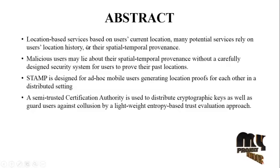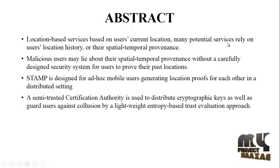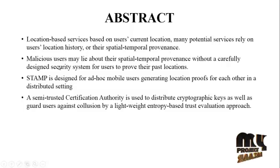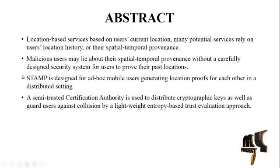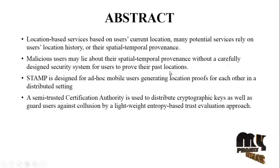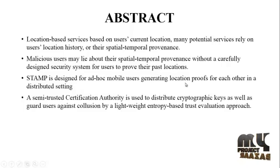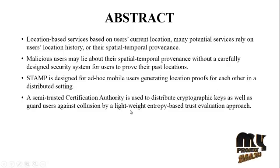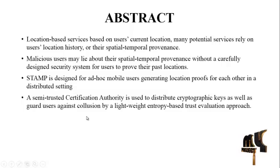Location-based services based on users' current location — many potential services rely on users' location history or their spatial-temporal provenance. Malicious users may lie about their spatial-temporal provenance without a carefully designed security system for users to prove their past location. STAMP is designed for ad-hoc mobile users, providing location proof generation in distributed settings. A semi-trusted certification authority is used for distributing cryptographic keys as well as guarding users against collusion by a lightweight entropy-based trust evaluation approach.